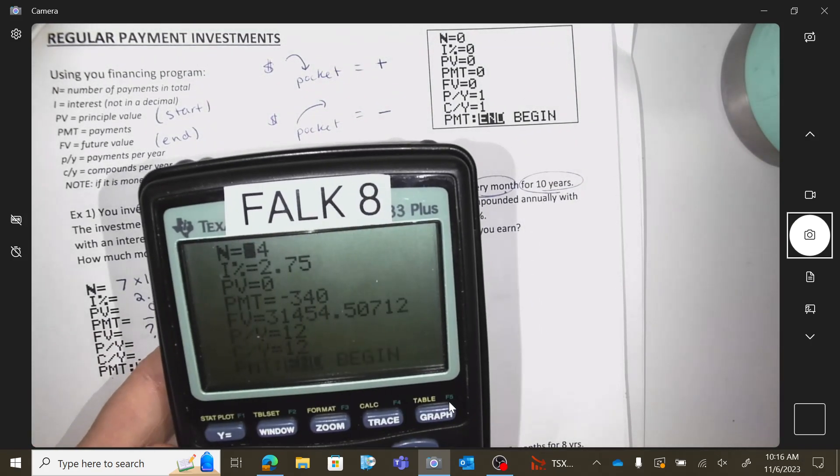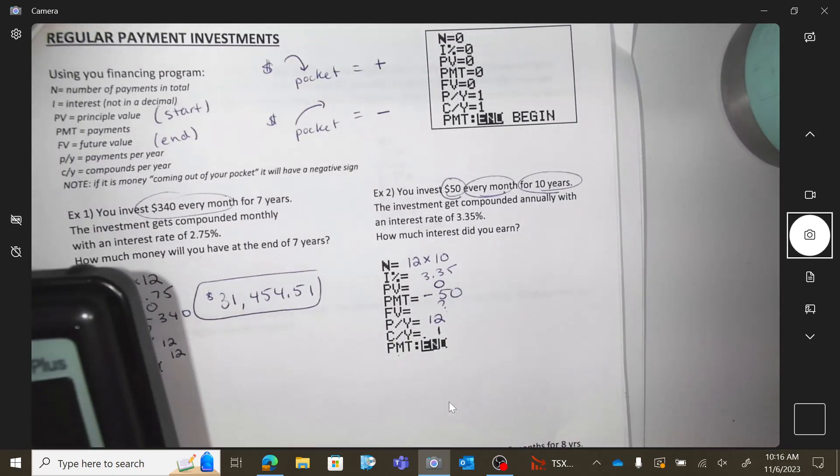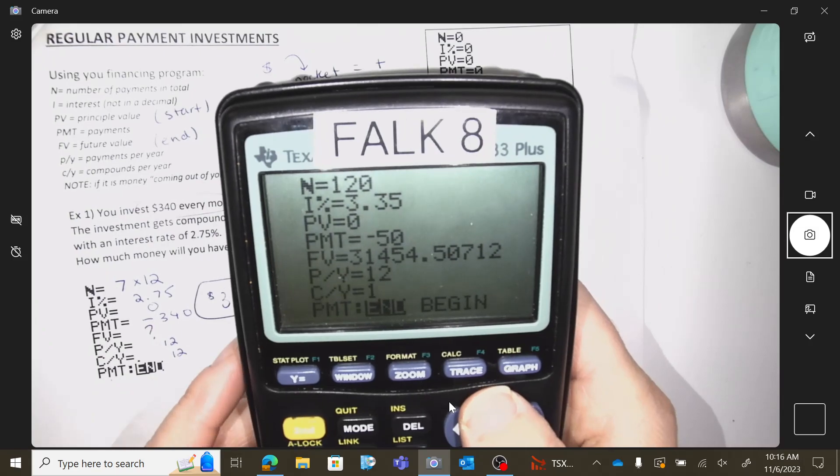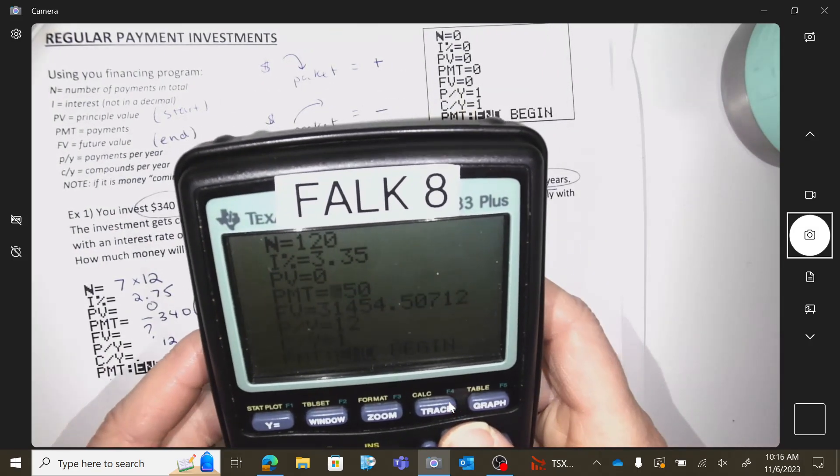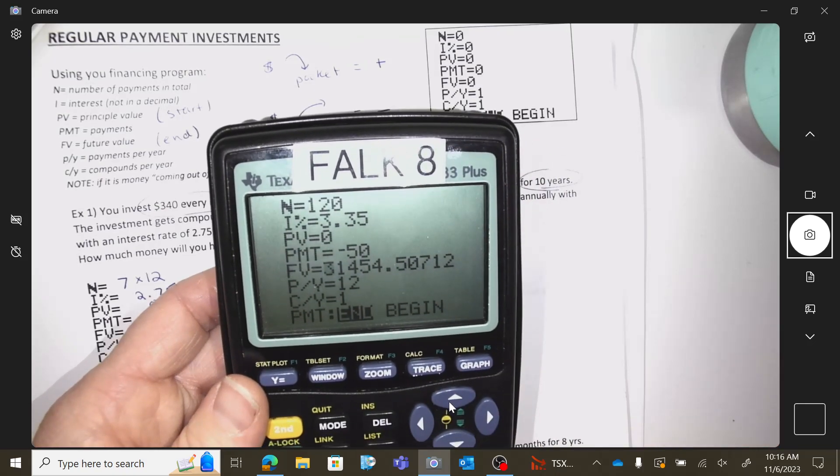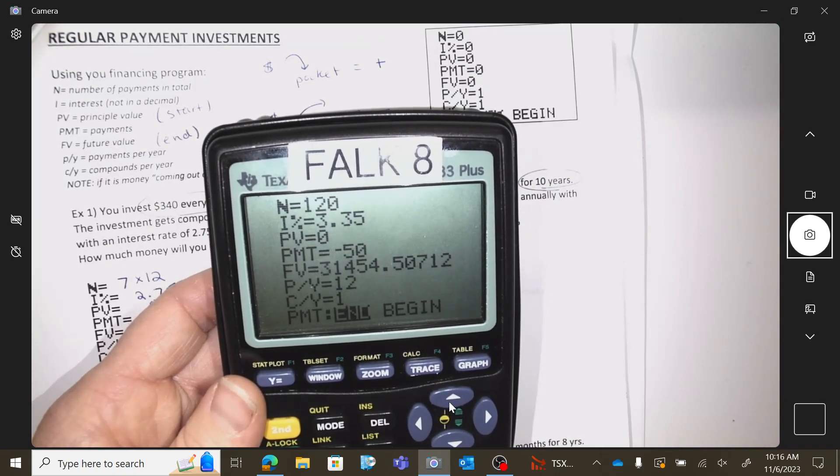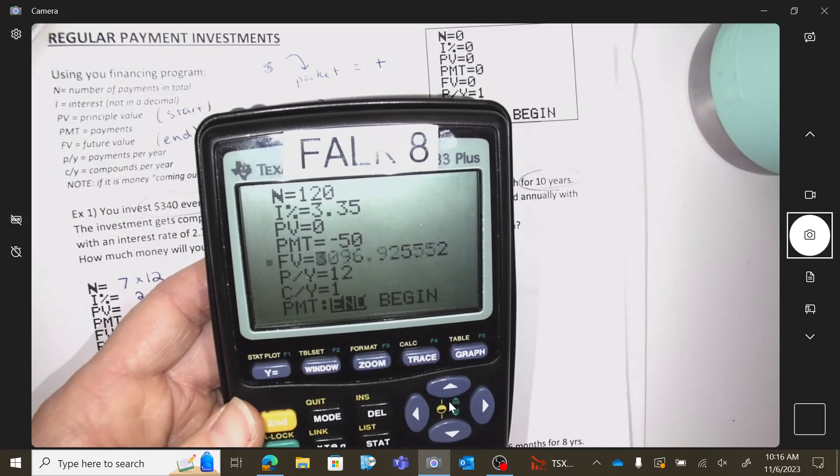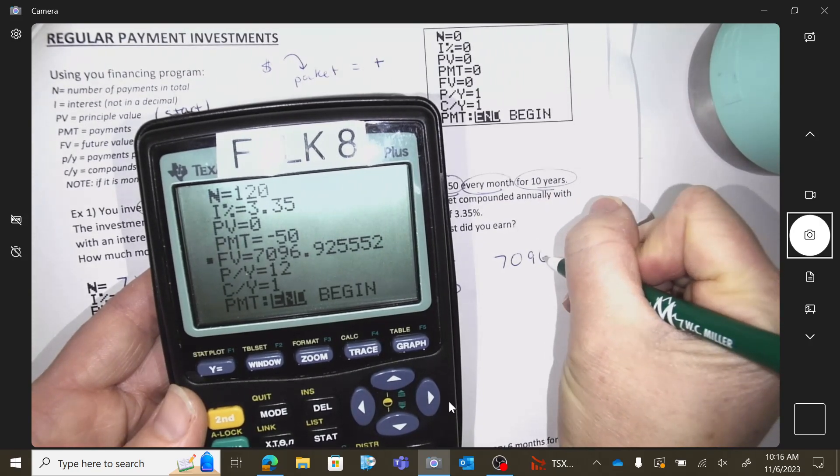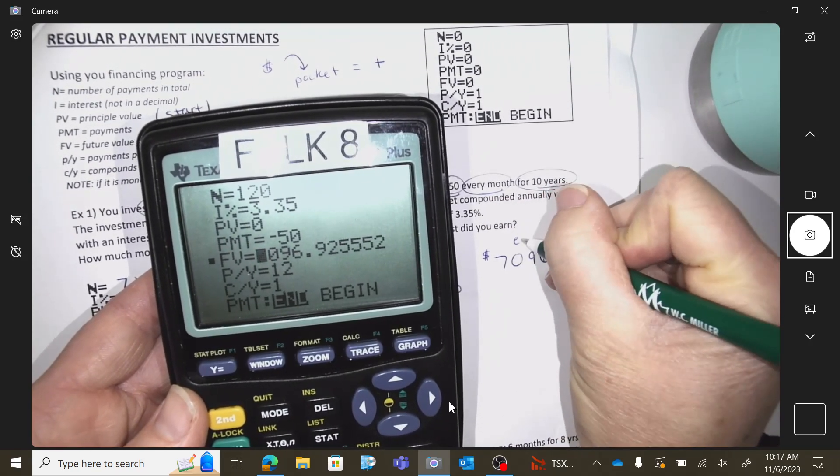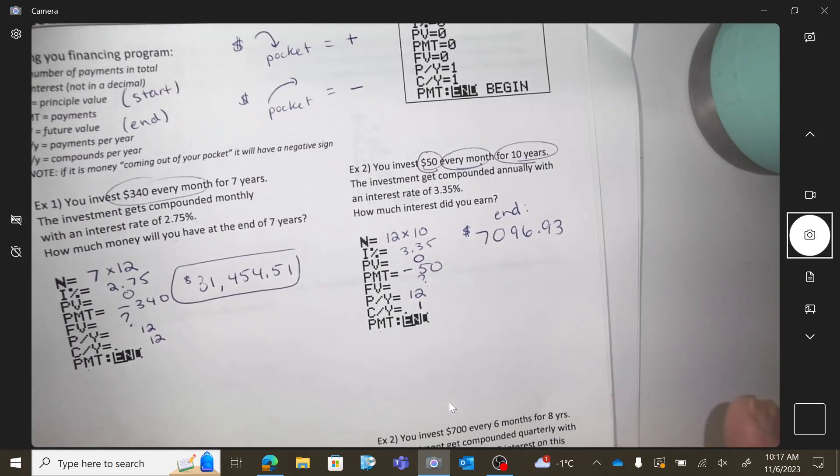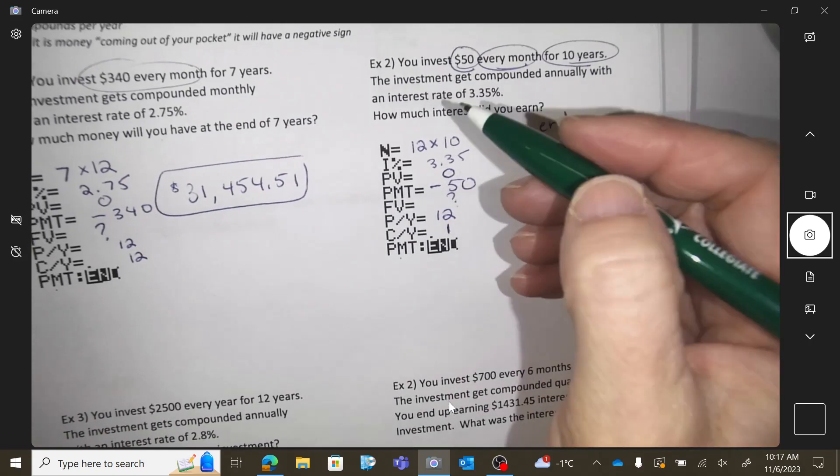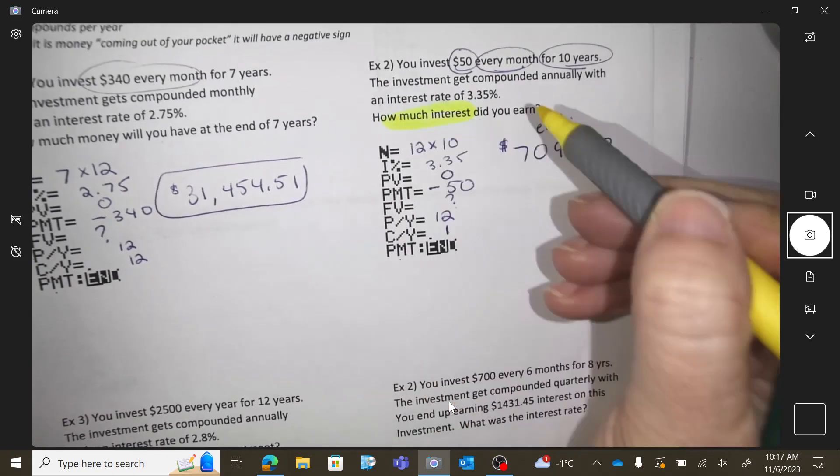So apps, finance, solver. Make sure at the bottom it says 12 and 1. Because sometimes it changes automatically. And then we forget. So then you're going to go to the future. And you're going to push alpha, enter. So that you can solve. Okay. So this is how much money I have at the end, right? But that's not the question. I want to know how much interest did I earn?